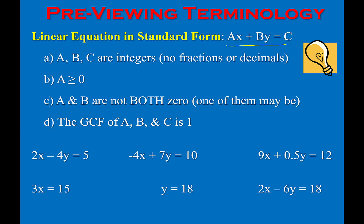Looking at the top-left example using our checklist: are x and y on the same side? Yes. Are there any fractions or decimals? No. Is the coefficient of x positive? Yes. Is the GCF between 2, 4, and 5 equal to 1? Yes. So this linear equation is in standard form. The second example: x and y are on the same side, no fractions or decimals, but the coefficient of x is negative — that violates rule B, so this is not in standard form. We could manipulate it to put it in standard form, which we'll look at in examples later.